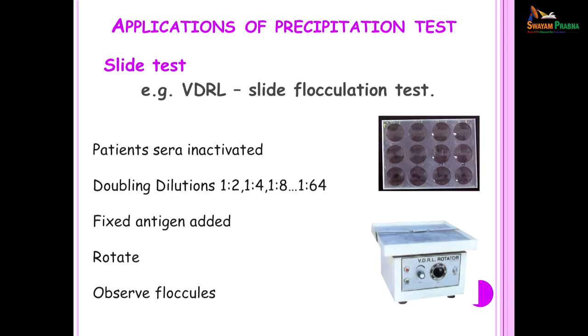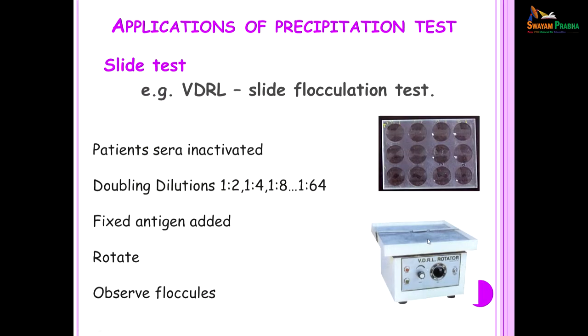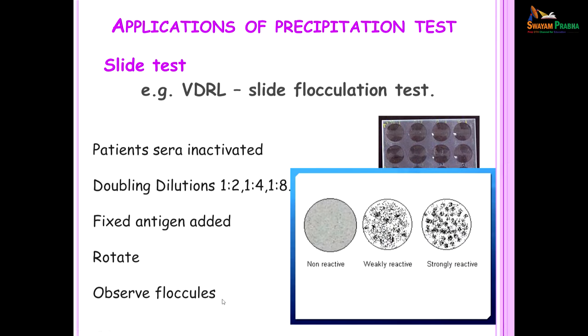The slide test for VDRL is called a slide flocculation test — here the patient serum is collected and inactivated. In the qualitative test we put a drop of patient serum and a drop of antigen, rotate it, and look under the microscope for visible clumps. Because of the prozone phenomenon we do not want to miss a diagnosis of syphilis, so we prepare doubling dilutions of the serum to which fixed antigen is added. The slide is placed on a VDRL rotator and under the microscope we look for floccules. A nonreactive, weakly reactive, and strongly reactive VDRL test can be distinguished.